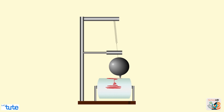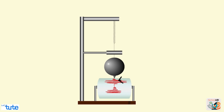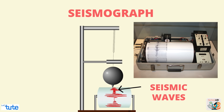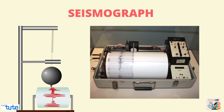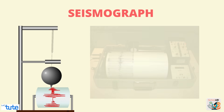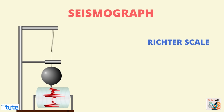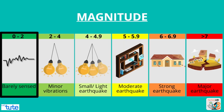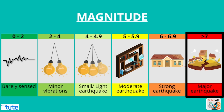Geologists use a device that can sense the waves created by the movement of the tectonic plates. These waves are known as seismic waves and the device is called a seismograph. Earthquake events are scaled according to the magnitude of the shock on the Richter scale, expressed in absolute numbers from 0 to 10, where 0 is lowest with no feeling and 10 is the highest, capable of creating severe destruction and loss of life.